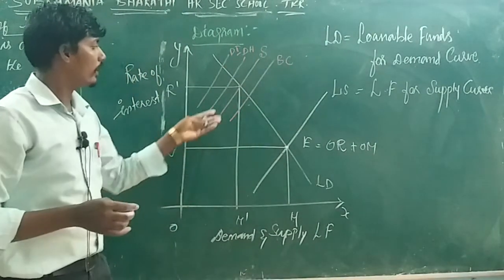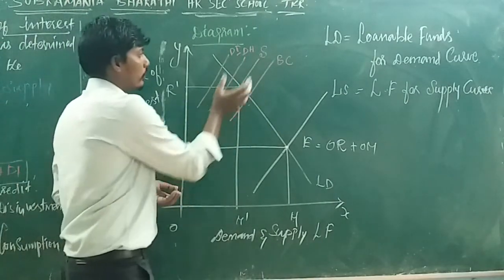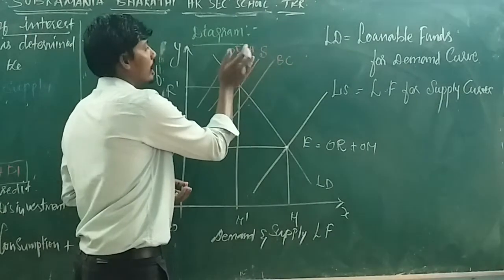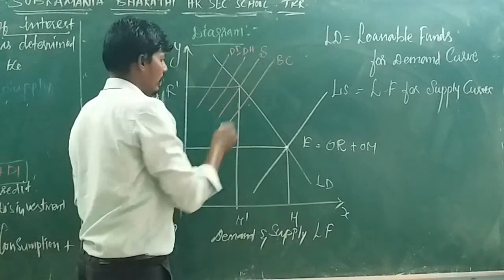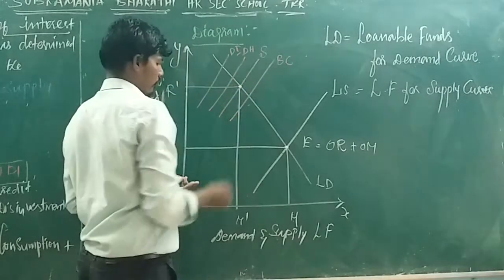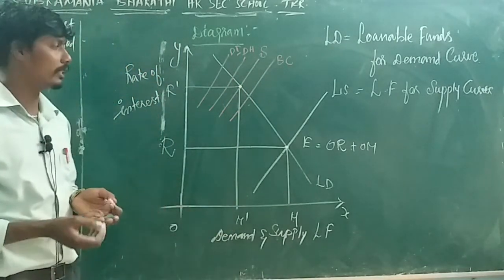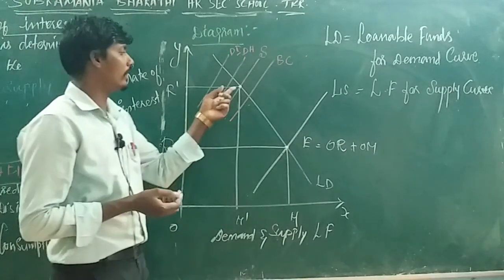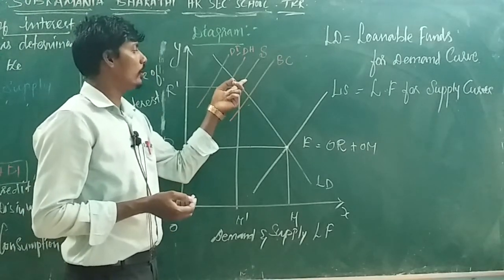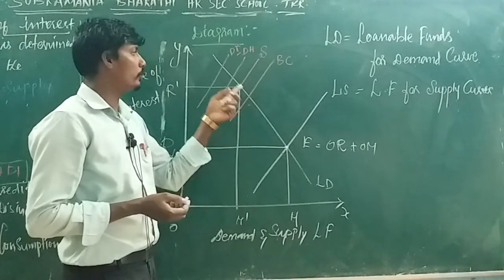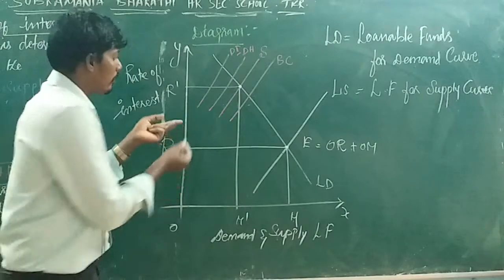Looking at the supply curve, the four categories are: first, Savings; second, Bank Credit; third, Dishoarding; and fourth, Disinvestment. These four components together form the upward-sloping supply curve for loanable funds.